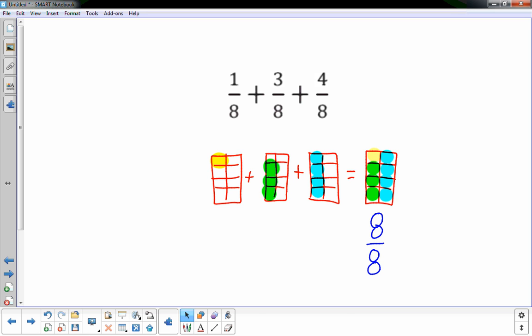Well, instead of drawing models, a quicker way is to think of this a little more mathematically. You could just add the top numbers or the numerators: 1 plus 3 plus 4 is 8. And with fractions, you just leave the denominators alone. So you have 8/8, which is the same as one whole thing. So this is the same as 1.